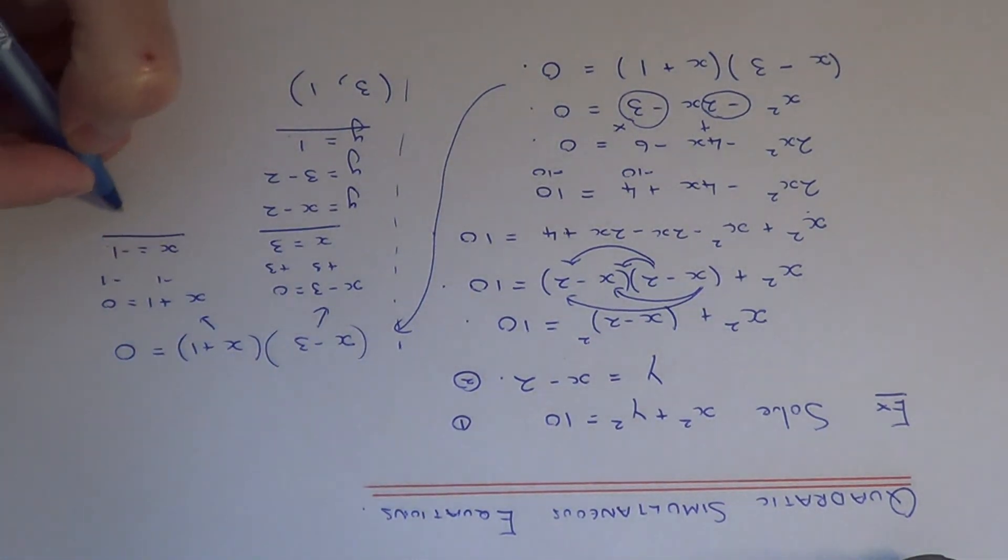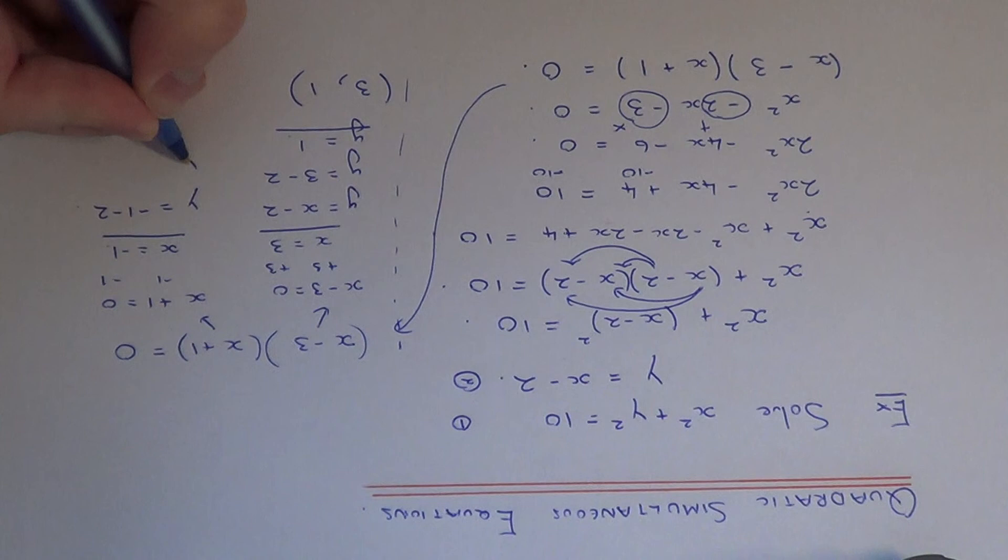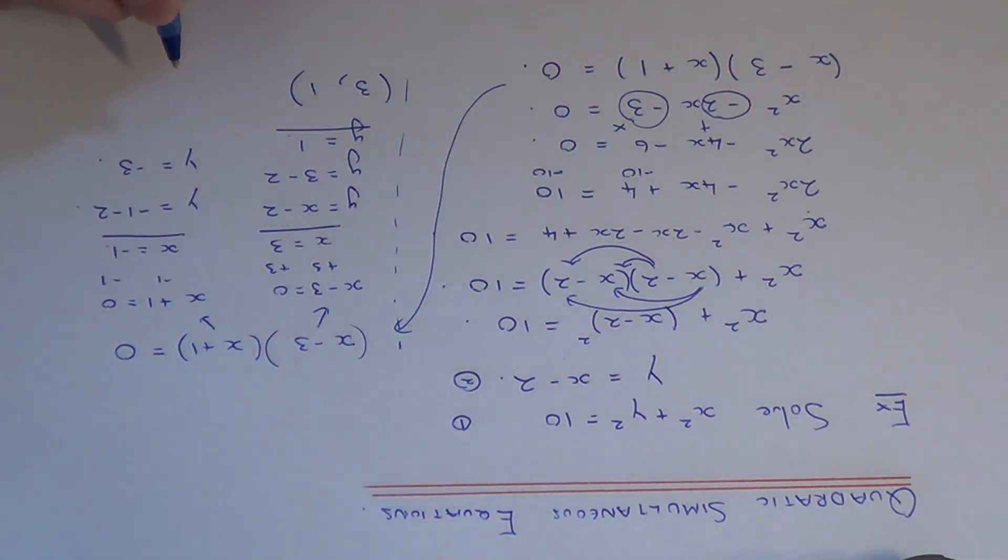And let's do x equals minus 1 now. So if we substitute it into the second equation again to give us our y-coordinates, minus 1 take away 2 is minus 3. So our second solution is minus 1, minus 3.